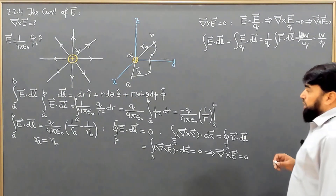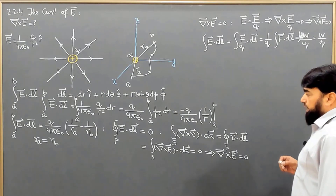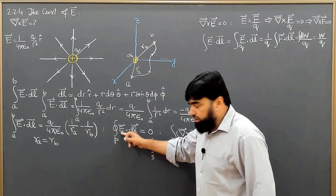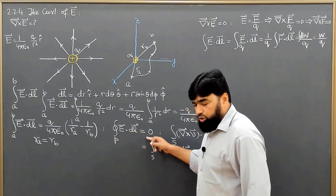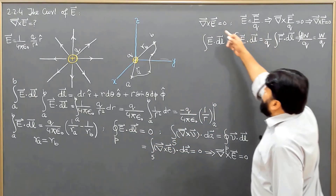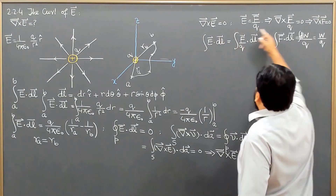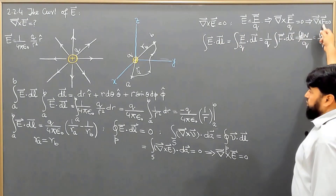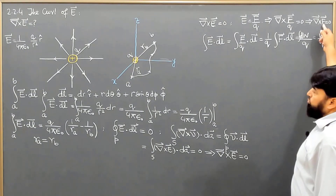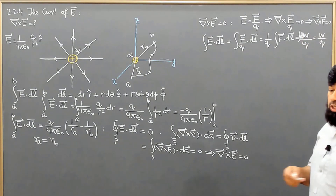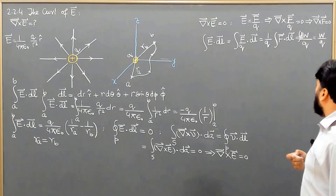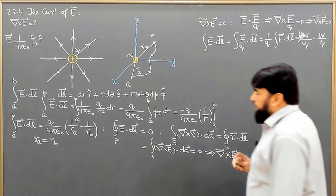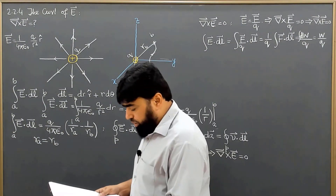These properties hold in a conservative field: in integral form, the closed path integral is equal to zero; the curl of the field is equal to zero; the curl of the force associated with that field is also equal to zero; and the work done on a unit charge in that field will also be equal to zero for a closed path.